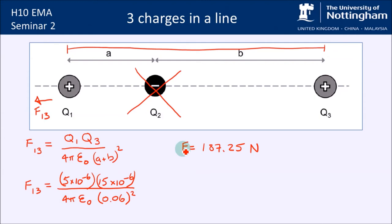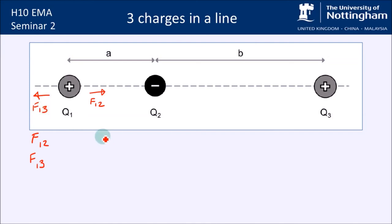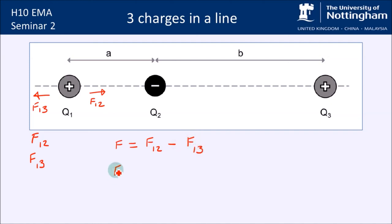Now we have two intermediate answers. The final answer is the vector sum of F12 and F13, because q1 is affected by both forces. Looking at this, F12 is much bigger than F13, so overall F12 wins out and the net force acts to the right. To calculate the magnitude, F overall equals F12 minus F13. Putting those numbers in, you get approximately 2059.7 newtons acting to the right.